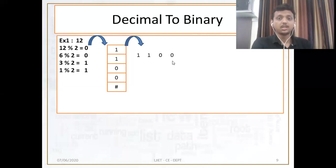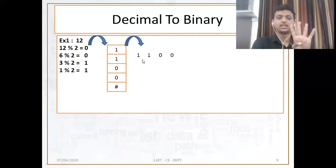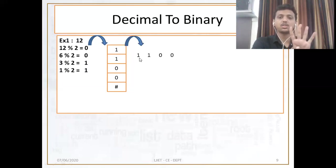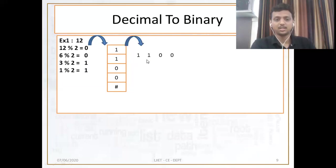This is 2 raised to 0, this is 2 raised to 1, this is 2 raised to 2, this is 2 raised to 3 — that means 8. 8 plus 4 becomes 12. You already get the answer.